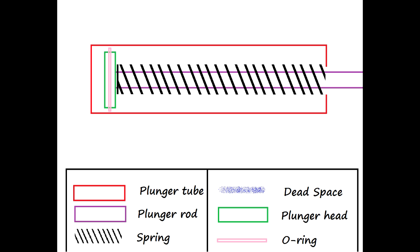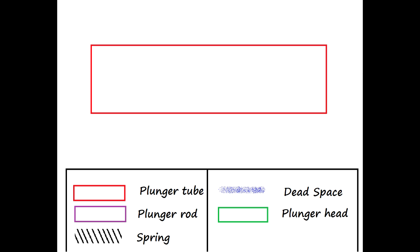First I'll explain the direct plunger system since it's a bit more traditional. Examples of the direct plunger tube system include the Night Finder, Longshot, Stampede, Firefly, Crossbow, and many other spring Nerf guns.